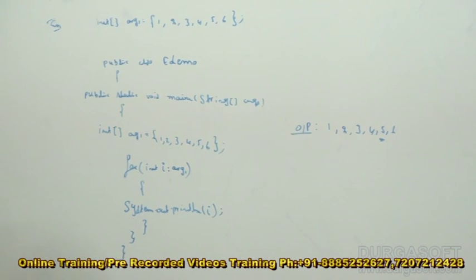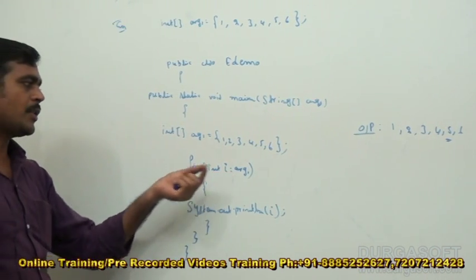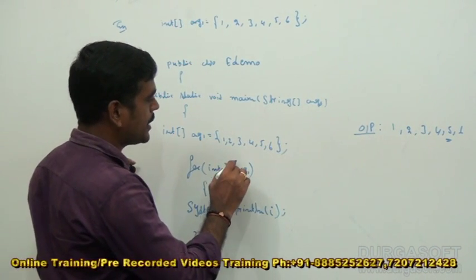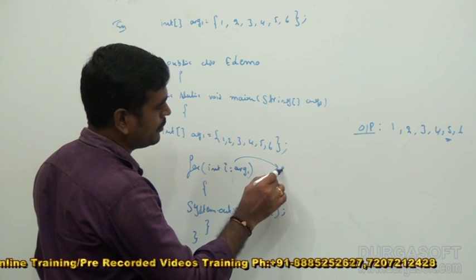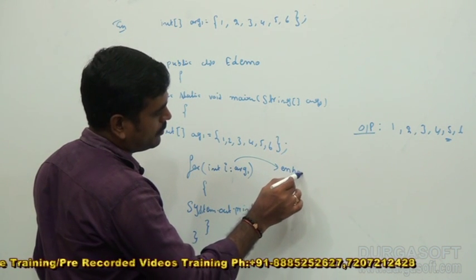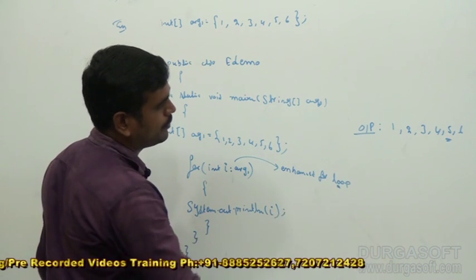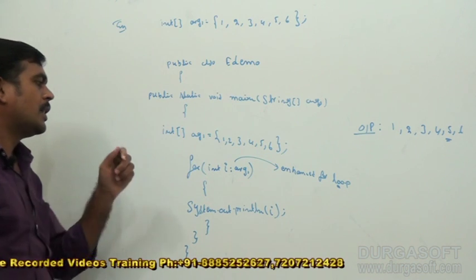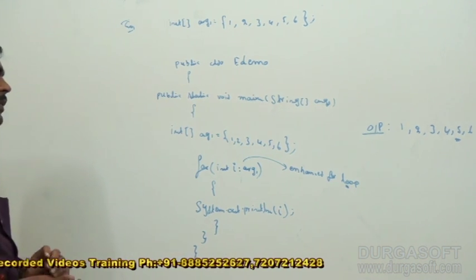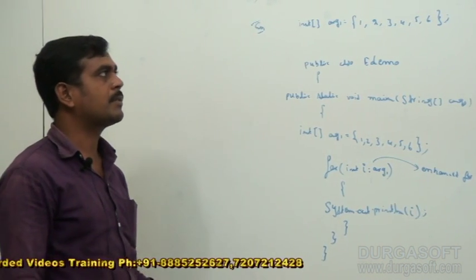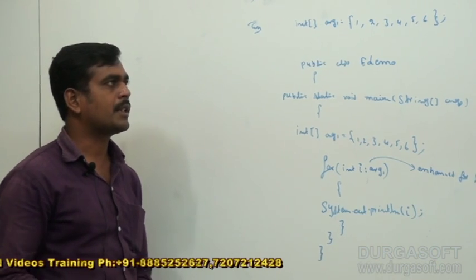Okay, so now here, this is called an enhanced for loop. This is the way enhanced for loops work. We will see the next session tomorrow.